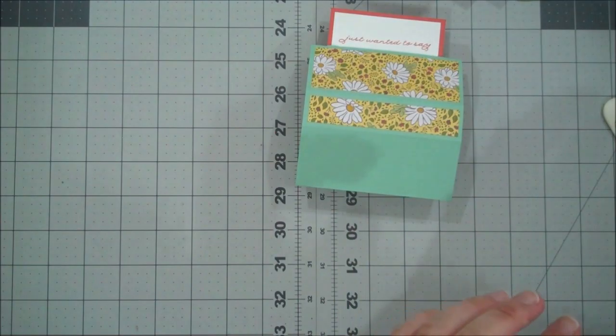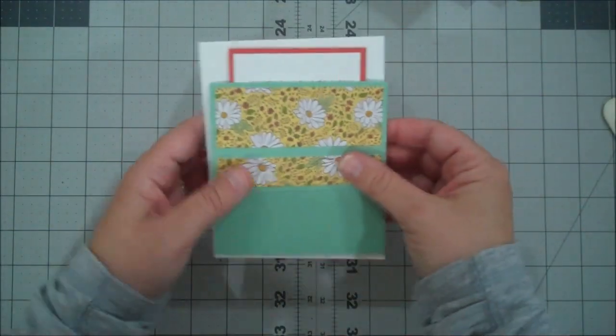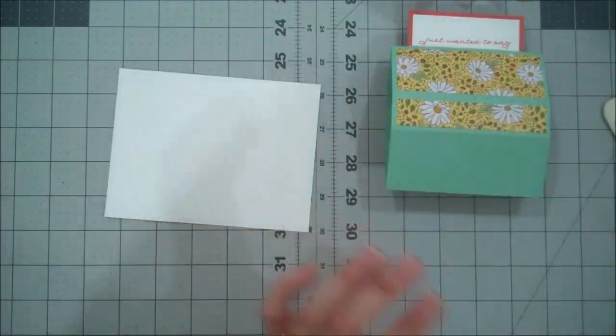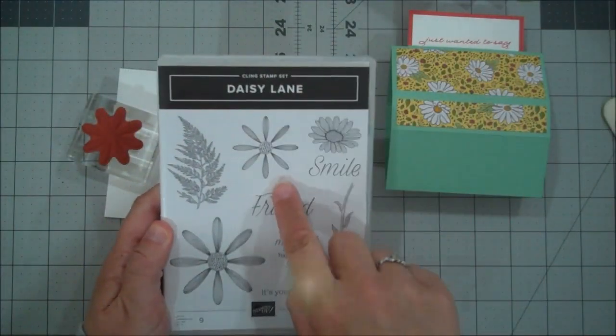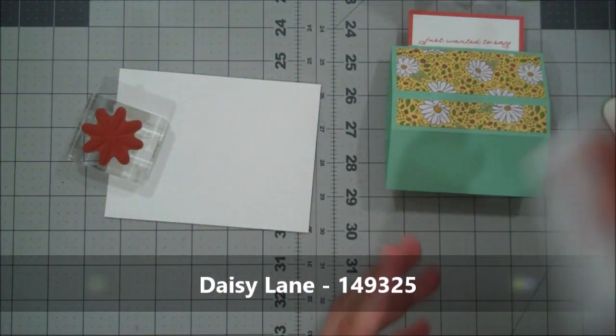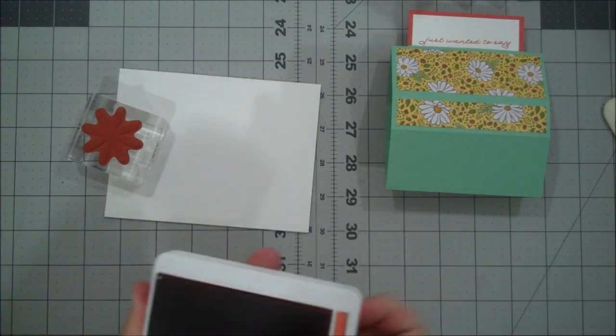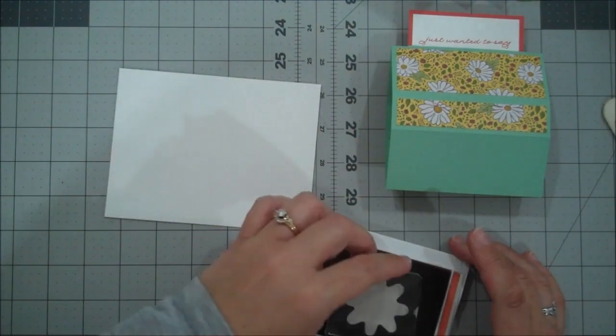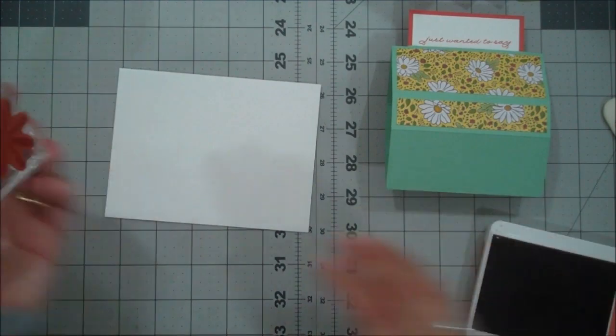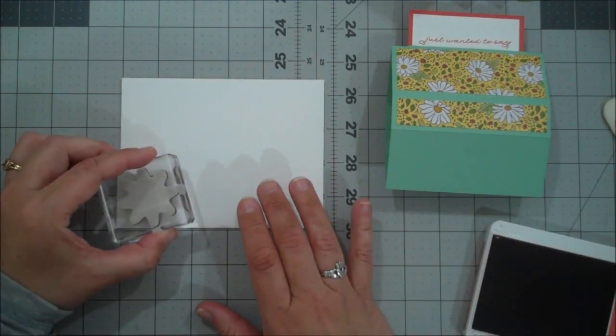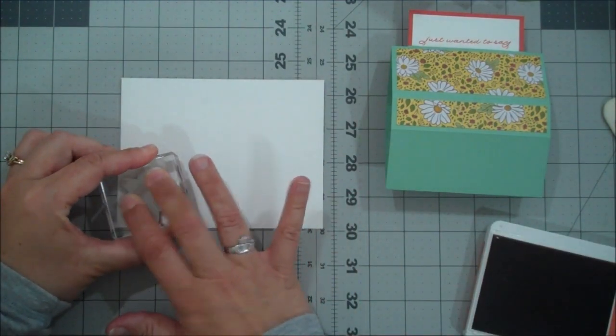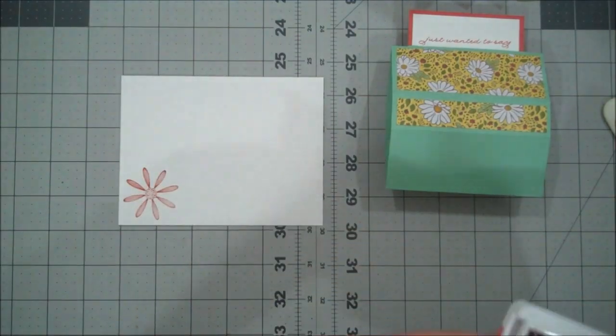Now with our medium sized envelope, you can see here it does fit. I am actually going to use one of the daisies from the Daisy Lane stamp set. And we're just going to stamp one of those in the terracotta tile, right onto the corner of our envelope just to have it be a little colorful and coordinate with the project inside. So isn't that fun?